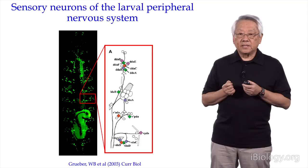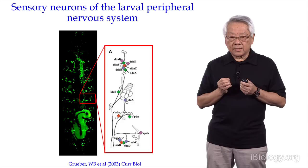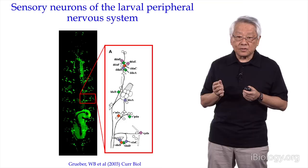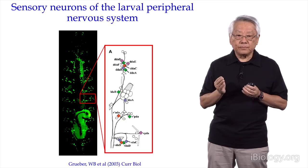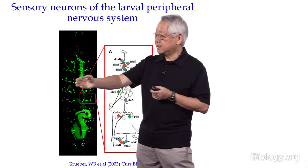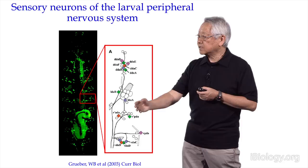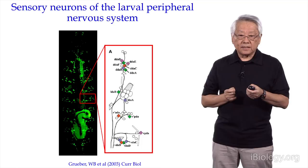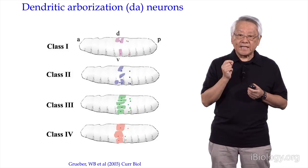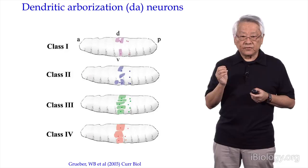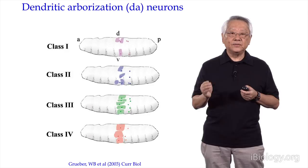The neurons we'll be studying are called dendritic arborization, or DA neurons. They are part of the Drosophila larval peripheral nervous system, which is organized in a bilaterally symmetric and segmentally repeated pattern. Each hemi-segment has 44 sensory neurons. Among those, 15 are the DA neurons we will be studying. These 15 DA neurons can be divided into four different classes — class 1 to 4 — with three class 1 neurons, four class 2 neurons, five class 3 neurons, and three class 4 neurons.